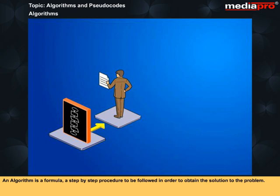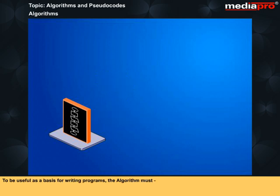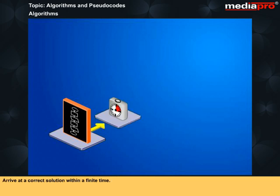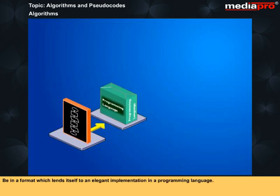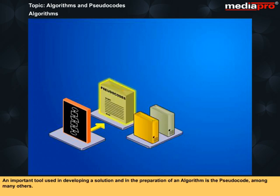An algorithm is a formula, a step-by-step procedure to be followed in order to obtain the solution to the problem. To be useful as a basis for writing program, the algorithm must arrive at a correct solution within a finite time, be clear, precise and unambiguous, and be in a format which lends itself to an elegant implementation in a programming language.